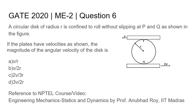In this video we will be discussing the sixth question from the mechanical engineering second set from GATE 2020 question paper. The question is: a circular disk of radius r is confined to roll without slipping at P and Q. As per the figure, if the plates have velocities as shown, the magnitude of the angular velocity of the disk is — options are v/r, v/2r, 2v/3r, 3v/2r.